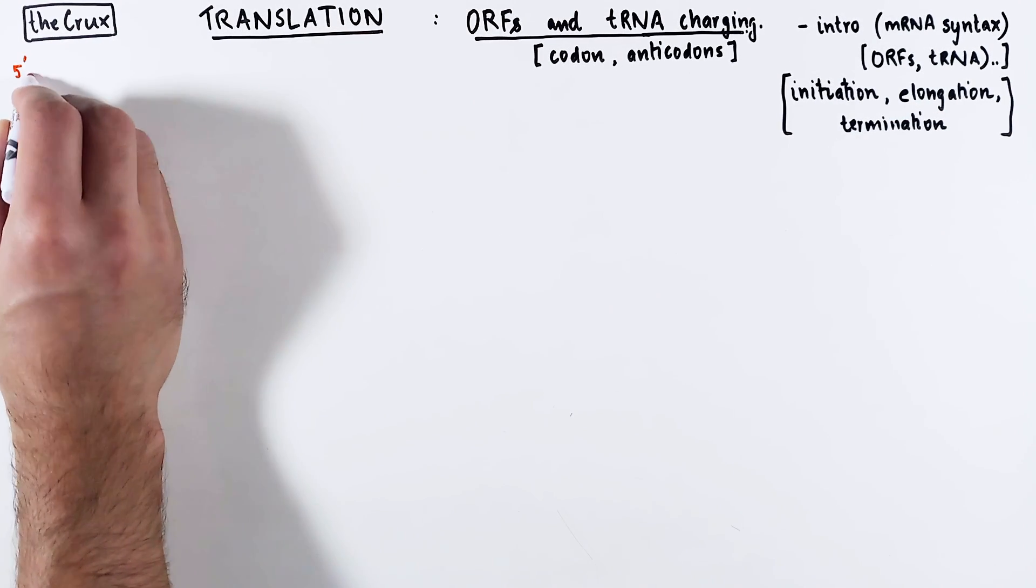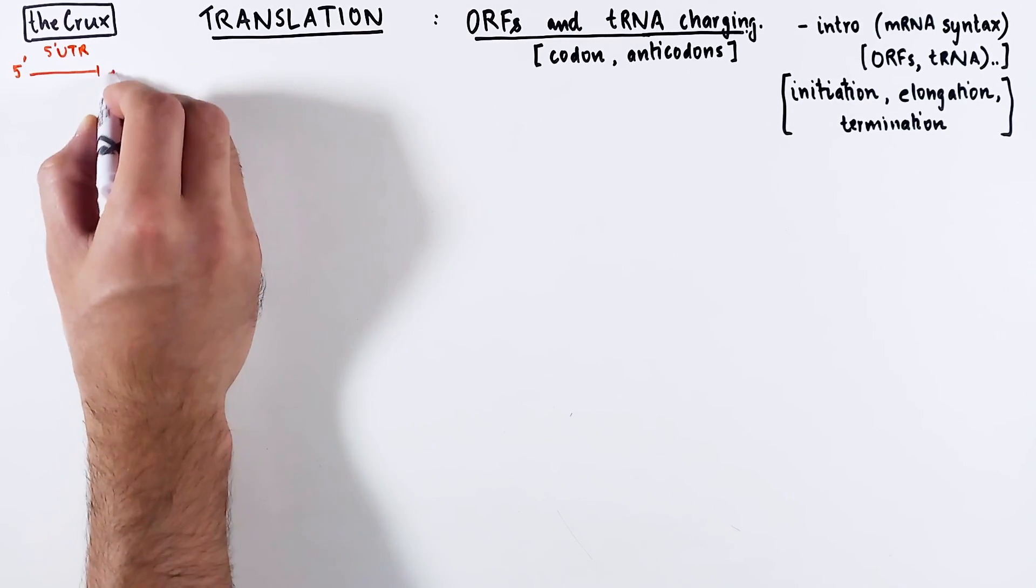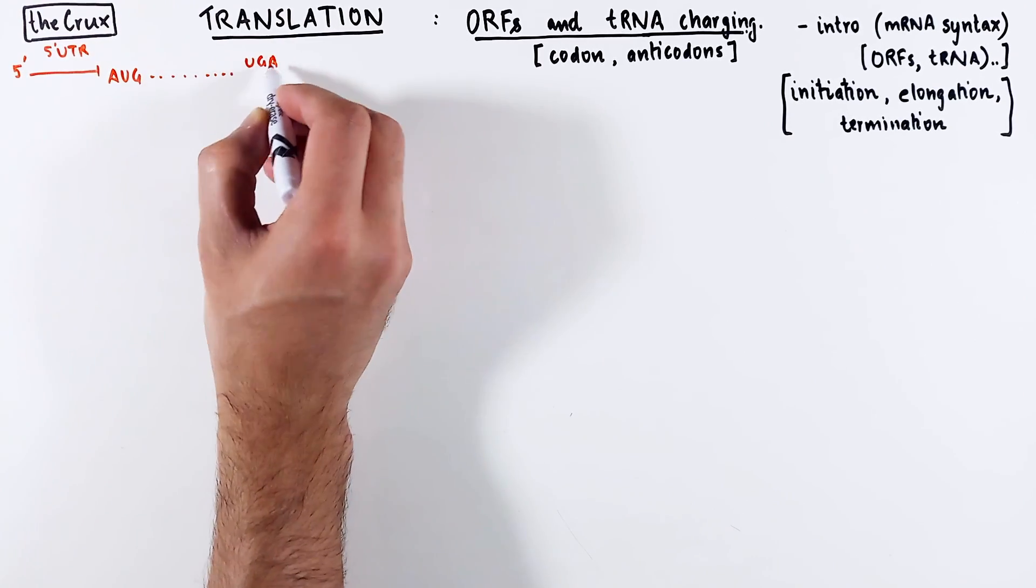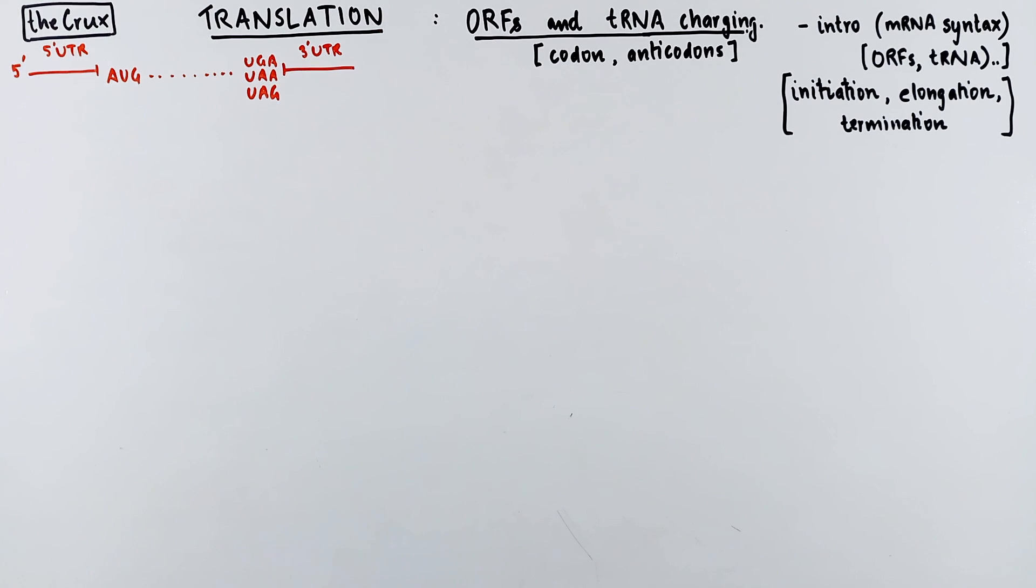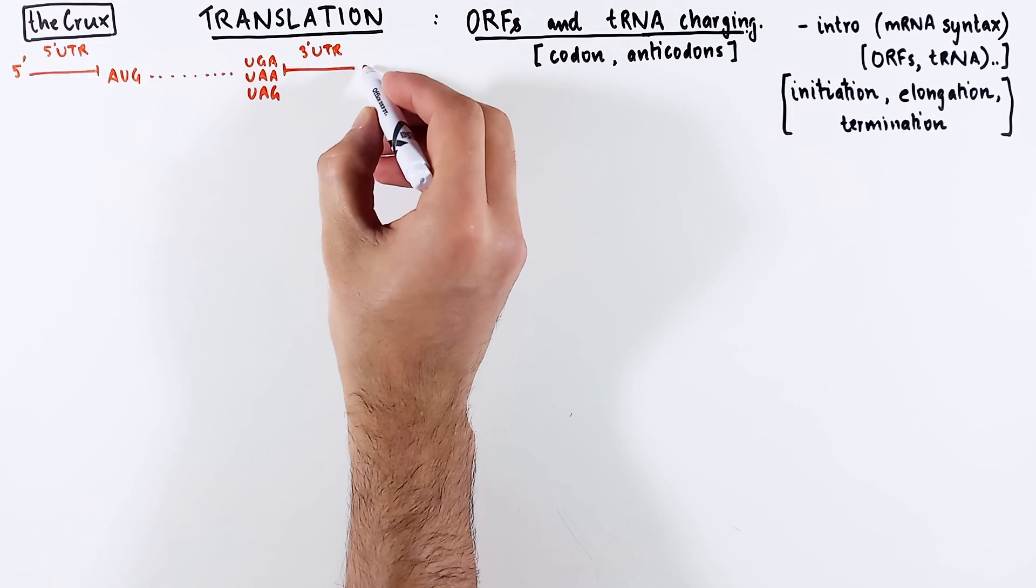The mRNA contains a 5' UTR that contains the ribosome binding site. This is followed by the start codon, and the message in the mRNA continues until the stop codon. Following stop codon, you get the 3' UTR, and that's the syntax of mRNA in prokaryotes.